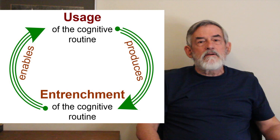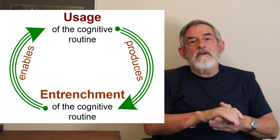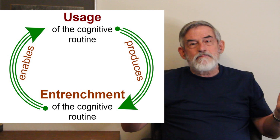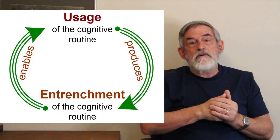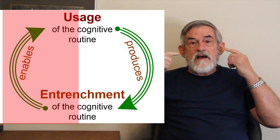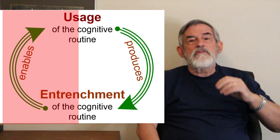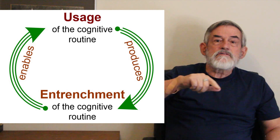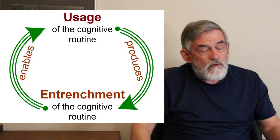The usage-entrenchment cycle is a very important thing to keep in mind when thinking about language. One implication is that it's perverse to take one side as the be-all and end-all and the other as epiphenomenal. Some of you may know the terms competence and performance — competence is essentially what's entrenched in your mind, and performance is usage of that structure. Some linguists have claimed performance is to be distrusted because it only imperfectly reflects what's in our minds. That doesn't work if you really believe the entrenchment-usage cycle — even erroneous usage can establish a new unit and change the nature of existing units.